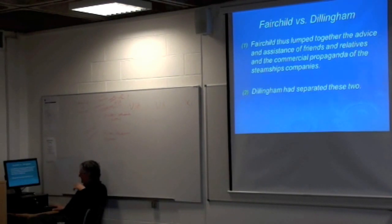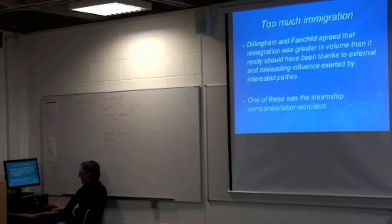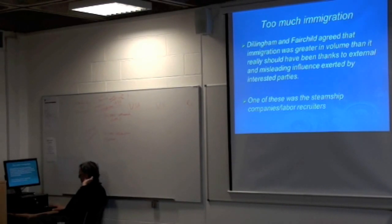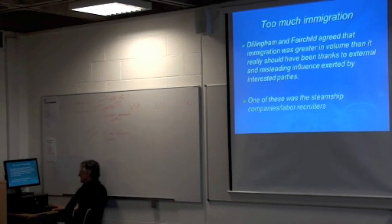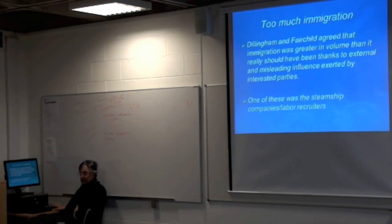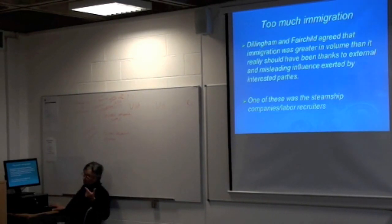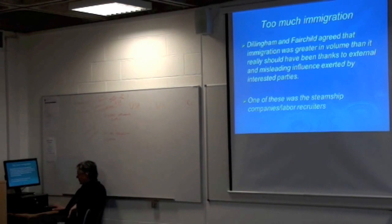Fairchild agreed that immigration was greater in volume than it really should have been, thanks to external and misleading influence exerted by interested parties — namely the steamship companies and their affiliates, the labor recruiters. Often labor recruiters, people connected to job opportunities in the States, worked for steamship companies and had offices in steamship companies, so these two were hard to separate. In terms of bookkeeping they were separate, but as far as their influence was concerned, they were very close.